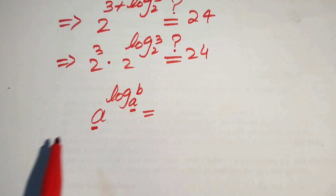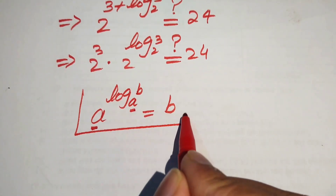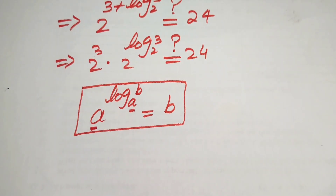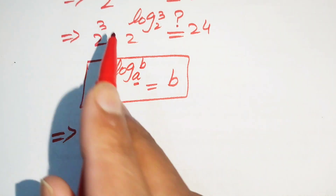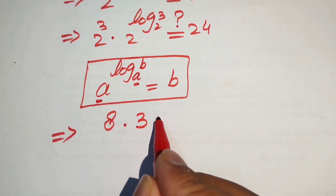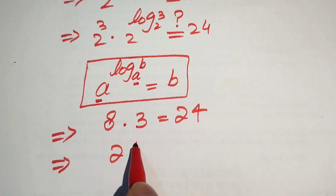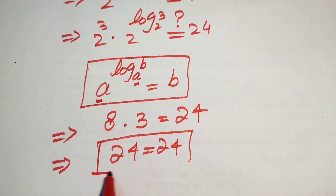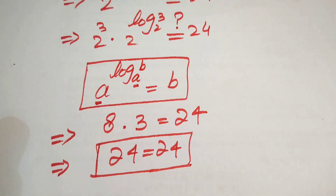Since the base and the log base are both 2, applying this property gives: 2 to the power of 3 is 8, multiplied by 3, which equals 24. So 8 times 3 is 24 equals 24. This confirms that our value of m satisfies the given equation, and this is the final answer.